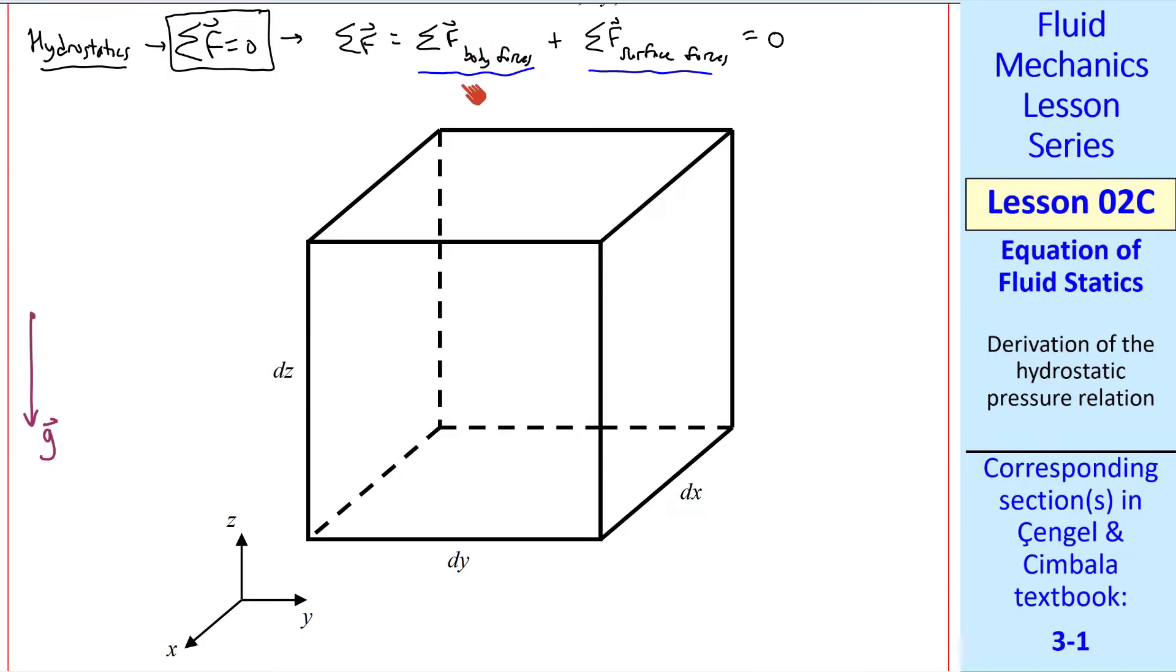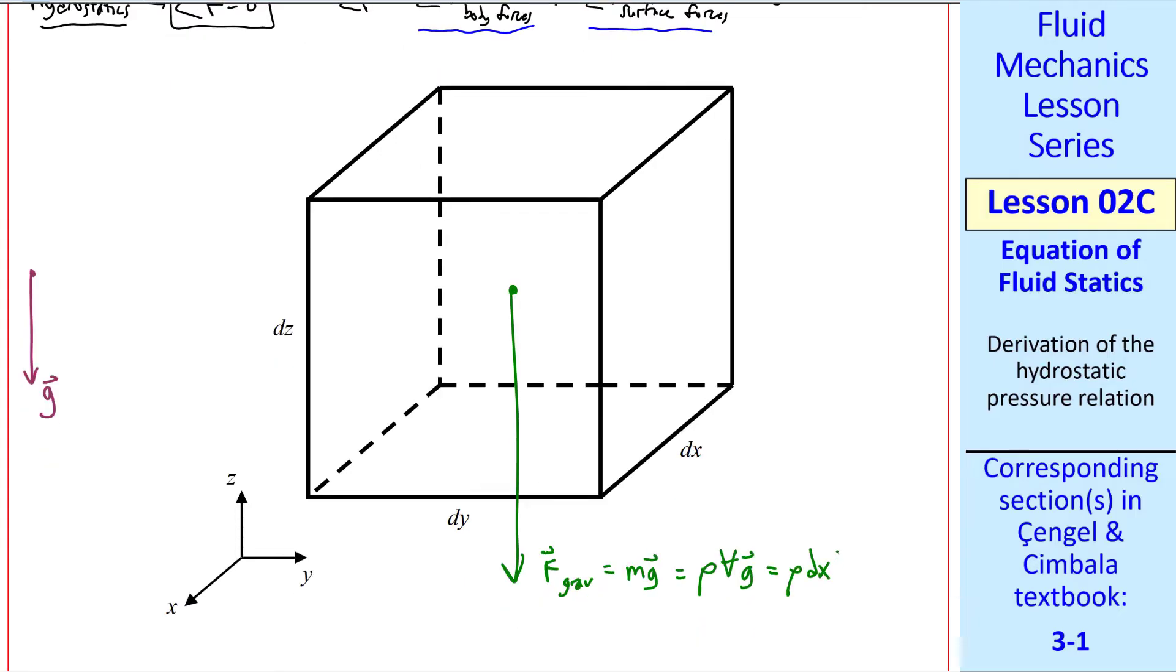Let's consider body forces first. Let's take this as the center of the element. The only body force we have here is gravity. The vector gravity force is mg, or ρgV, or, since the volume is dx dy dz, ρ dx dy dz g.